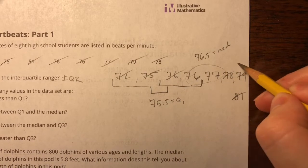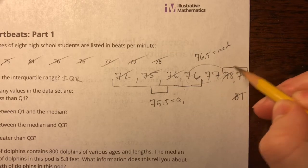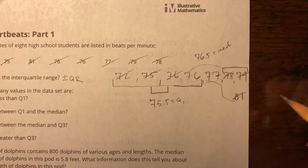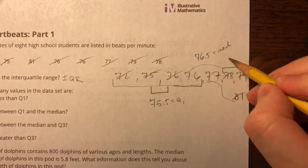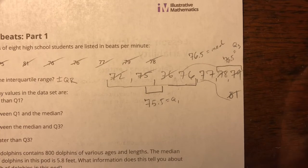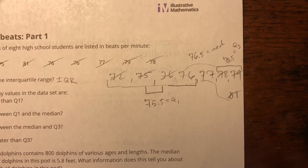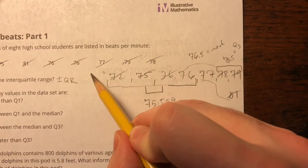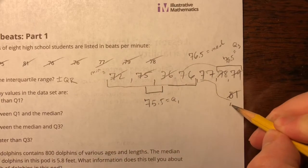Do the same thing here. I get the middle between 78 and 79 from this whole set, and I'm going to get 78.5 for Q3. So then this is my min, and 81 is my max.